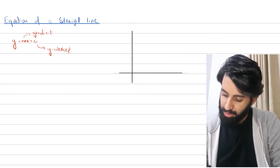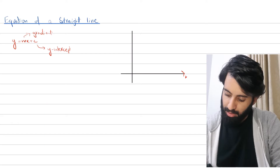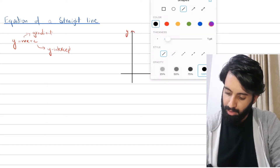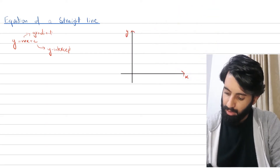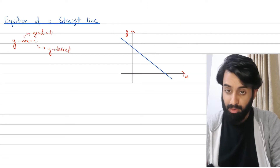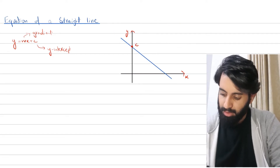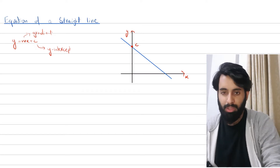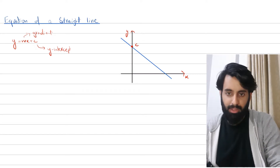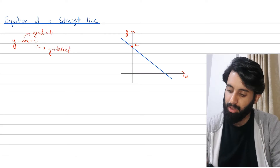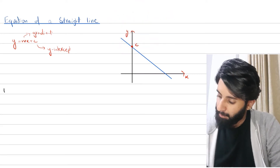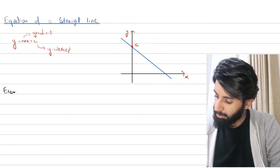Graphically, this is what it looks like. Suppose you have your y-axis and your x-axis — here's x, here's y — and this is a straight line. This right here is c. So if you're given a line and you can see what the y-intercept is, you can simply replace it with that; otherwise there's a way to calculate it, which we'll learn in a couple of minutes.